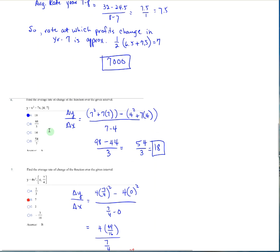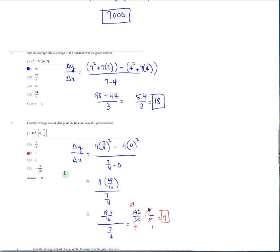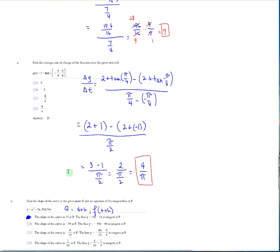Problems 6 and 7 are average rate of change questions like the first example — you should be able to do those. Number 8 has trig in it: g of t equals 2 plus tan t over the interval negative π/4 to π/4. Using the same formula: 2 plus tan(π/4) minus (2 plus tan(negative π/4)) over π/4 minus (negative π/4). The denominator is π/2. Tan(π/4) is 1 and tan(negative π/4) is negative 1, so numerator is 3 minus 1 equals 2. We get 2 over π/2 equals 4 over π.